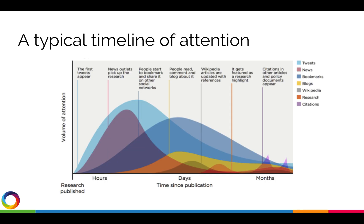Social media is only one piece of the Altmetrics puzzle, but discussions on Twitter in particular are usually the earliest and most voluminous forms of engagement we see. Many researchers, institutions, publishers, funders, and government organizations use Twitter to share and discover research, find trending topics, and find key opinion leaders.